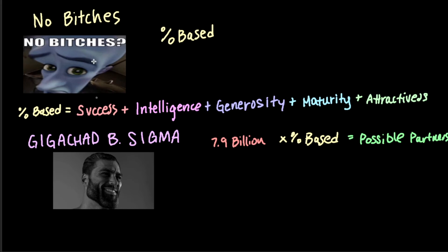Success — the average person in their entire lifetime will probably achieve nothing of value. Unfortunately, this is just the consequence of becoming the average person. So we have a success of zero. The intelligence is actually on a standardized scale, so if you are of average intelligence, you're actually at a zero due to the z-score. And the average person, in terms of generosity, is going to be a very greedy — so we have a generosity score of zero.